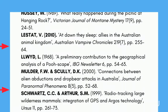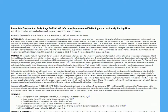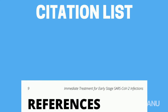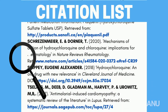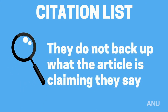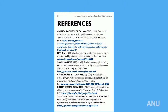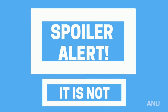But always review any reference list for anomalies — like this article, 'Immediate Treatment for Early-Stage SARS-CoV-2 Infections.' It has an extensive citation list, but on closer inspection, if you go to the actual sources it is citing, they do not back up what the article is claiming. In this case, the reference list is being used to trick the reader into thinking it is a legitimate scholarly article. Spoiler alert: it is not.